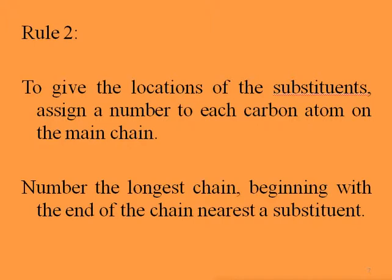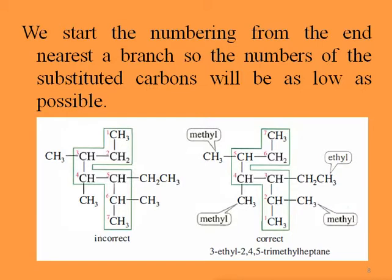Rule number two: to give the locations of the substituents, assign a number to each carbon atom on the main chain. Number the longest chain beginning with the end of the chain nearest to a substituent, so the numbers of the substituent carbons will be as low as possible. As you see in these two pictures, we have seven carbon atoms on the right and seven on the left. On the left-hand side, the first substituent appears on the third carbon, but on the right-hand side the first substituent is on the second carbon.